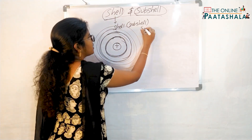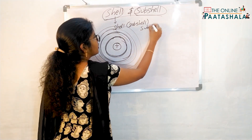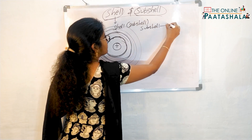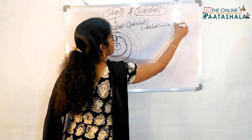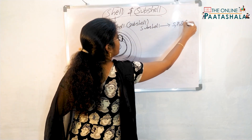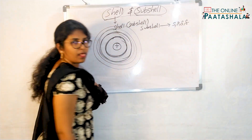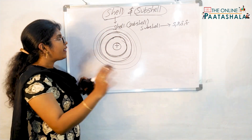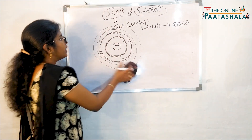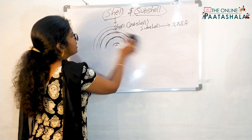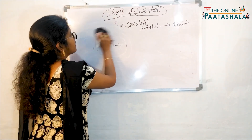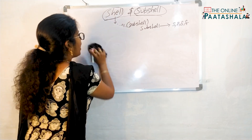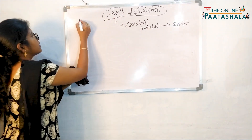These subshells will be of S, P, D, and F. Now we will learn how many subshells each shell has and what those subshells are.